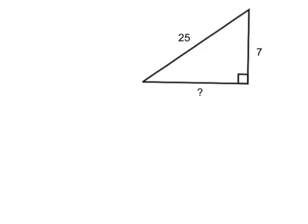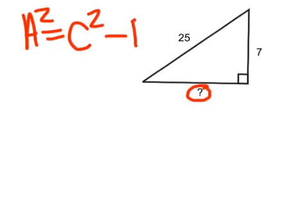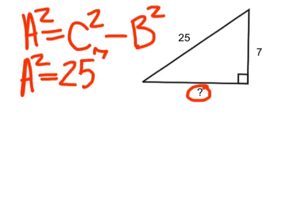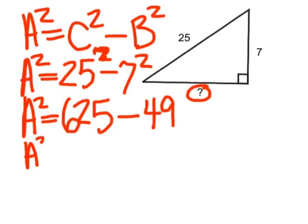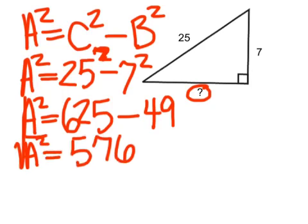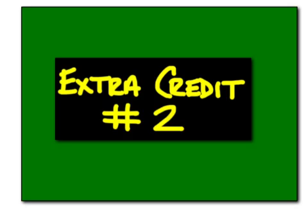Practice problem number 4. What are we looking for? The leg. So we're going to do A squared equals C squared minus B squared. What are we plugging in for C? 25. What is 25 squared? 625. What is 7 squared? 49. What do we get when we subtract? 576. When we find the square root, our final answer is 24. If you had 24, go ahead and come on up.